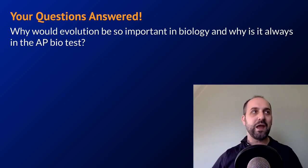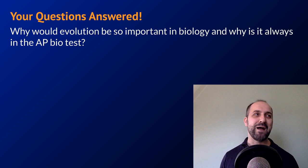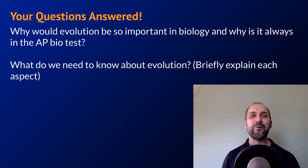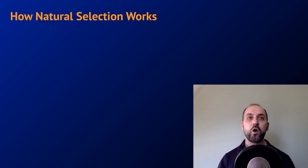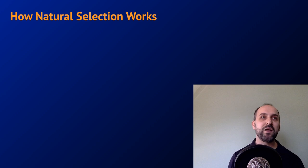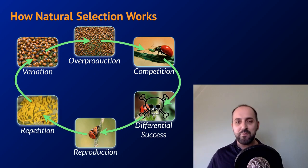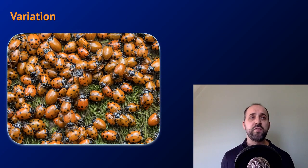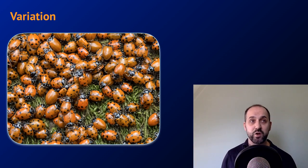We have a couple of questions here. Somebody wrote in asking why evolution would be so important in biology and why it's always on the AP Bio test, and similarly, what we need to know about evolution. So that's the purpose of today. We're going to start with a conversation about natural selection. The way I like to think about it is as a cyclic process working through different dynamics. We'll start with variation. The bottom line is that all living things are different from all other living things — even identical twins have some differences in their genetic makeup. Variation is universal among living things.